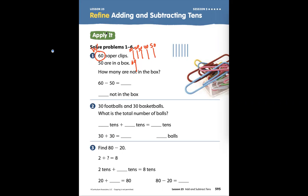50 of them are in a box. So 10, 20, 30, 40, 50 are in the box. How many are not in the box? 10 are not in the box.